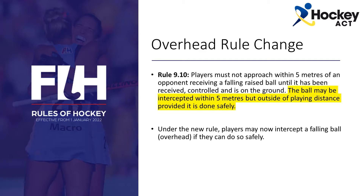The addition states the ball may be intercepted within 5 metres, but outside the playing distance, provided it is done safely. What this means is that under the new rule, players may now intercept a falling ball if they can do so safely. Over the next few minutes, we will look at some video footage and dissect these clips according to the rules.